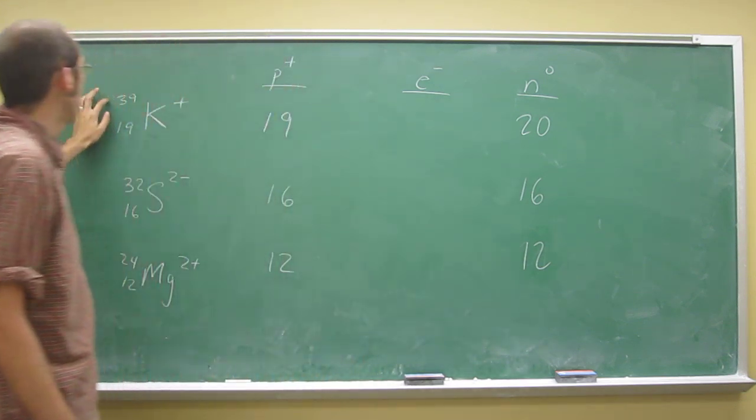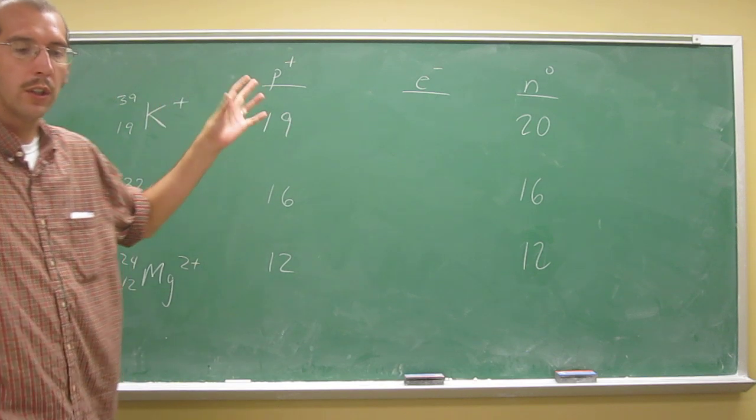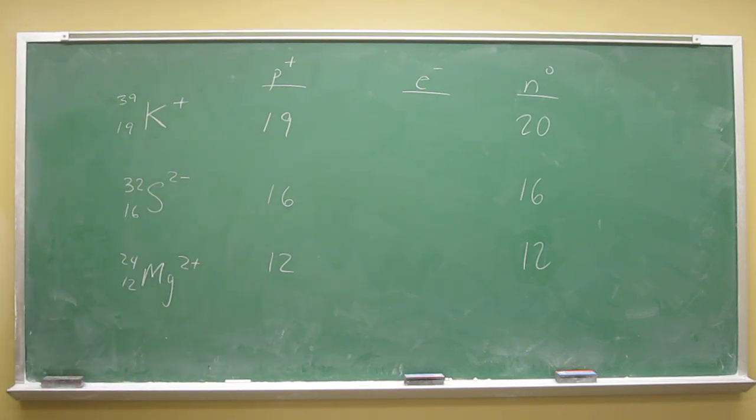The mass number is an interesting way to define it because you actually define the actual nuclear particle when we start talking about nuclear chemistry as potassium 39.